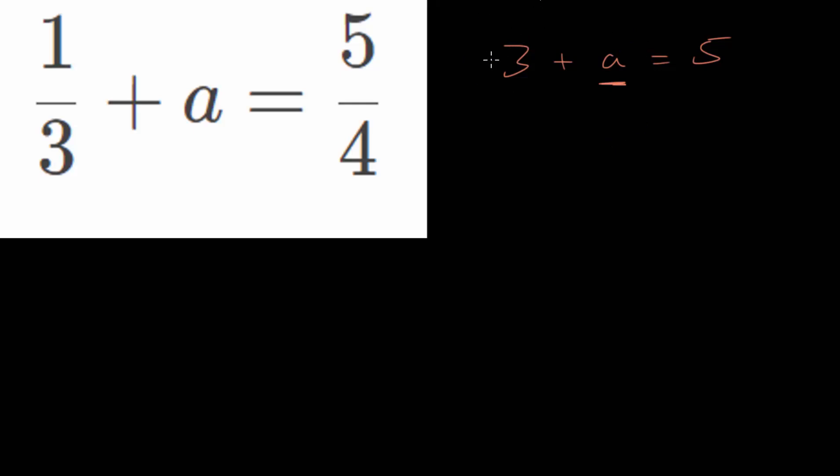And since this is a positive number, you can imagine this as having a plus sign in front of it if you want. To cancel out positive numbers, we can use subtraction. If we subtract 3 here, positive 3 minus 3, that's just 0. Though we can't just subtract 3 from one side of the equation, we need to do that from both sides of the equation so that we don't change anything.